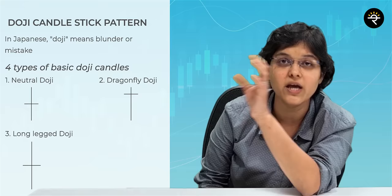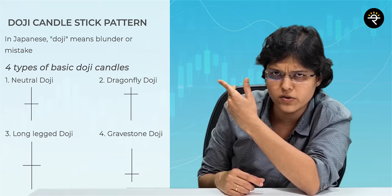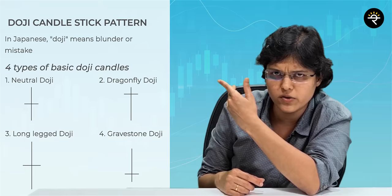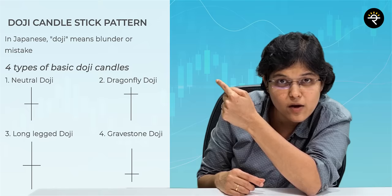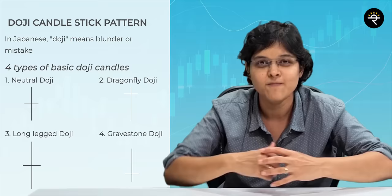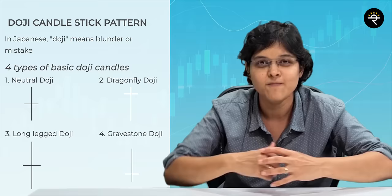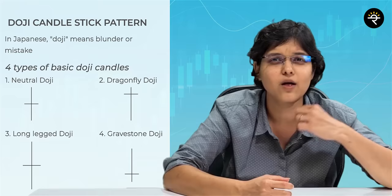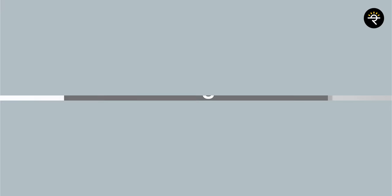Whether it's a neutral doji, dragonfly, long-legged doji, or gravestone doji, all of them indicate that something is going to change. Neither the buyers are winning nor the sellers are winning, neither the bulls nor the bears are winning. Everyone is trying to take it in a specific direction, but finally the open and close is more or less at a similar price.